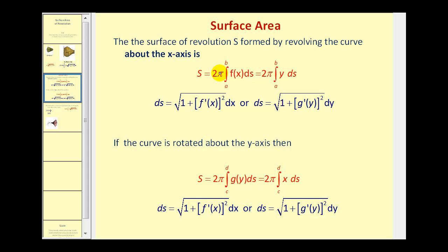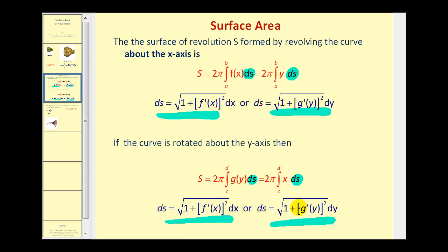Let's formalize this idea. The surface area of revolution formed by revolving a curve about the x-axis is given by two pi times the definite integral from a to b of f of x ds, or equivalently two pi times the integral of y ds. Here ds is the arc length element, which can be expressed in terms of x or y. If using x, the radius must also be in terms of x; if using y, the radius in terms of y. For rotation about the y-axis, a similar formula applies with the radius being x or y accordingly.